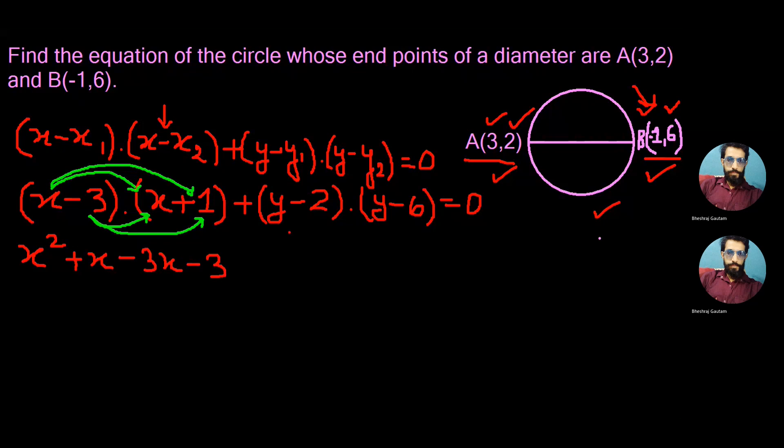Finding the product with these two factors, we get y times y is y². y times -6 is -6y. -2 times y is -2y, and finally -2 times -6 is plus 12, equal to 0 on that side.